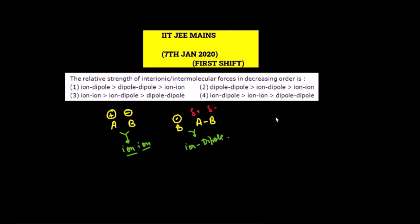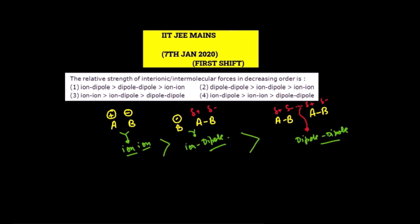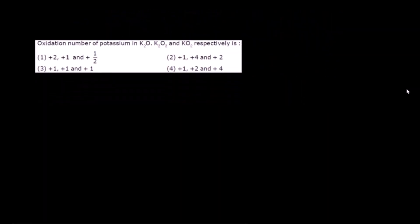For the third case, consider two AB molecules each having partial positive and partial negative charges. When these partial charges attract each other, this is called dipole-dipole attraction. Since greater charge density means stronger attraction, proper charges attract more strongly than partial ones. Therefore the decreasing order is: ion-ion > ion-dipole > dipole-dipole. The correct answer follows this order.